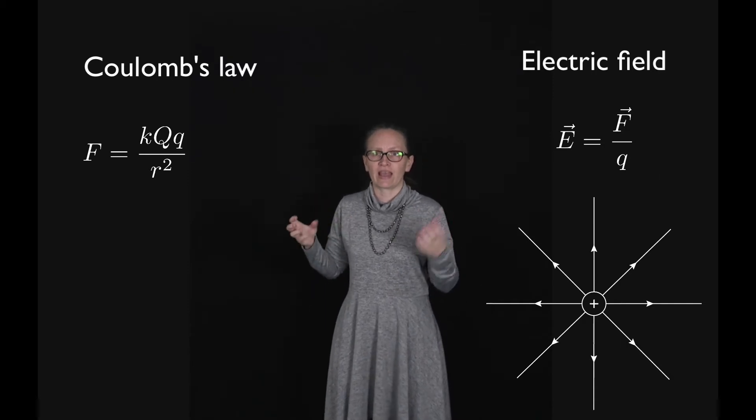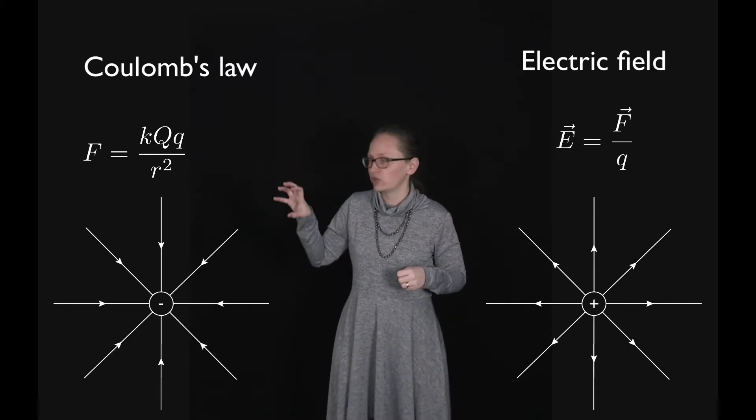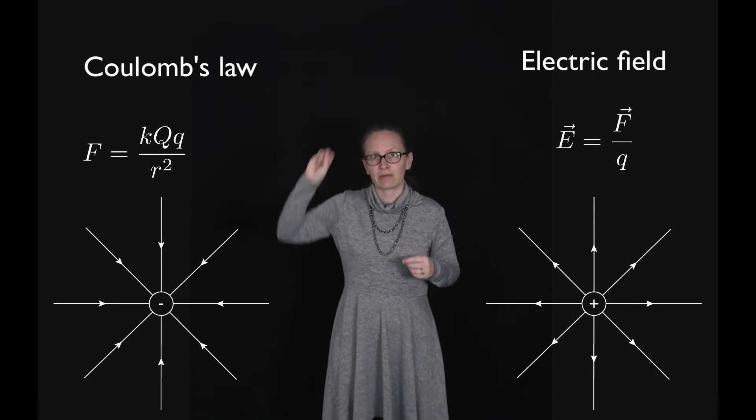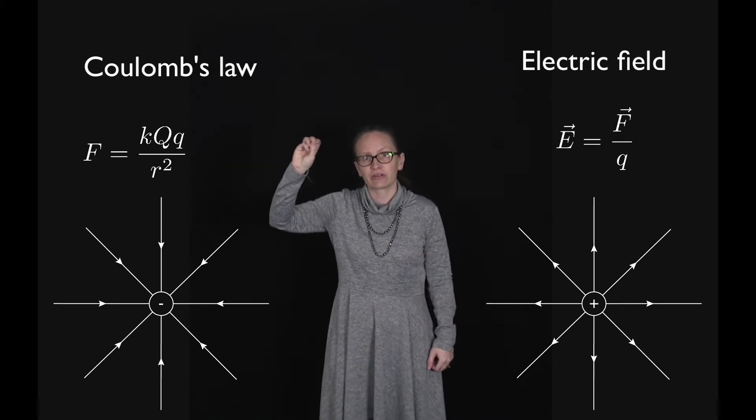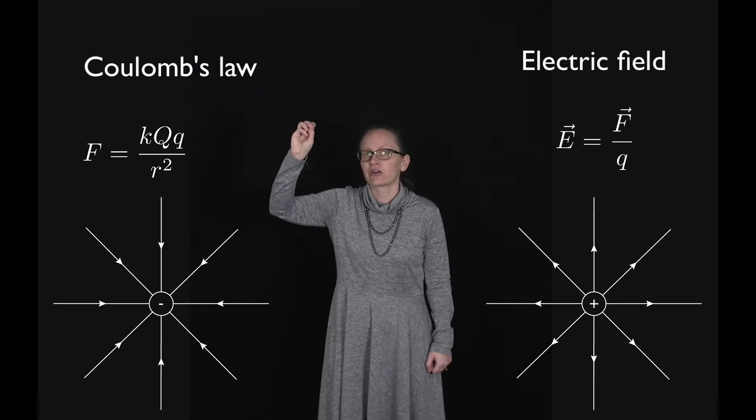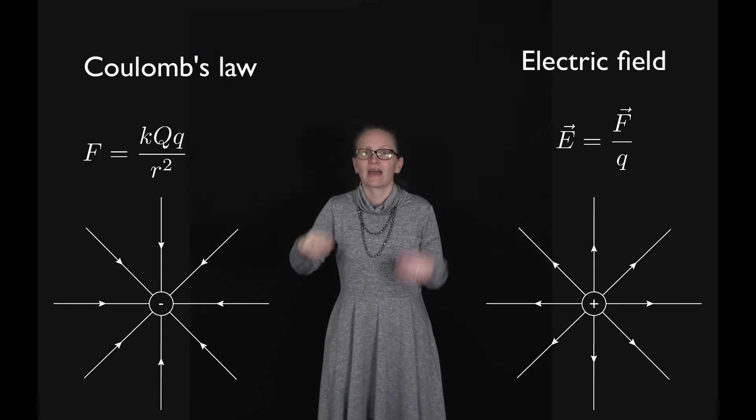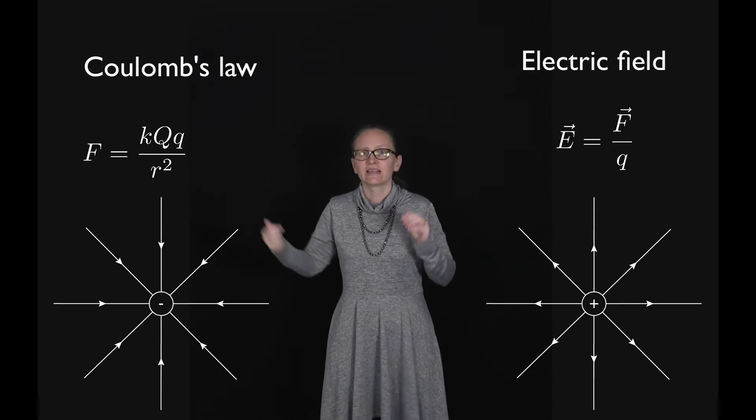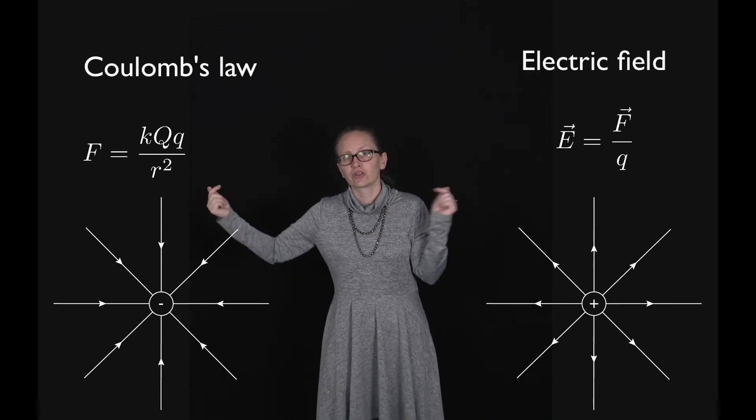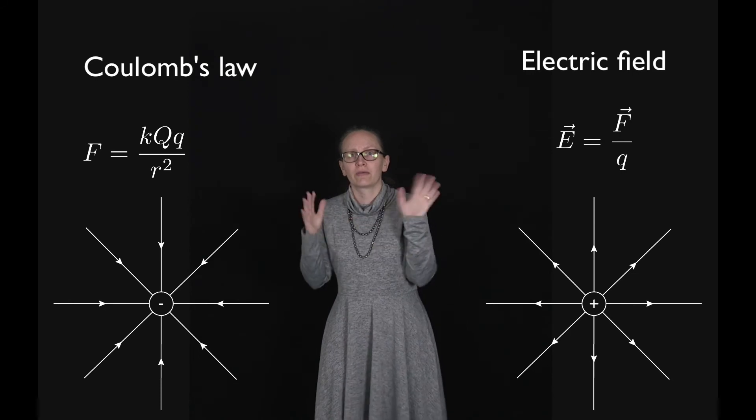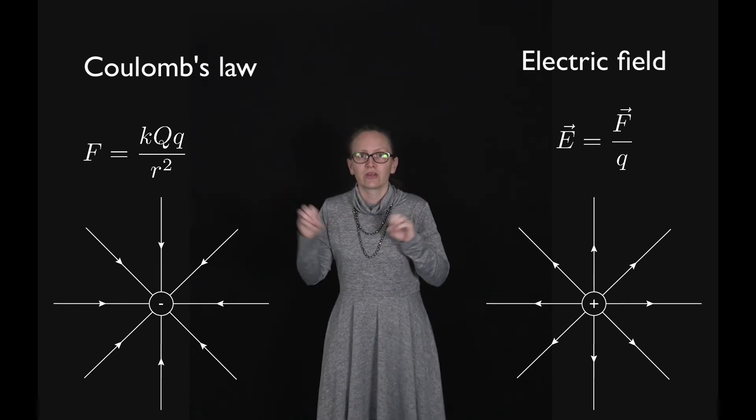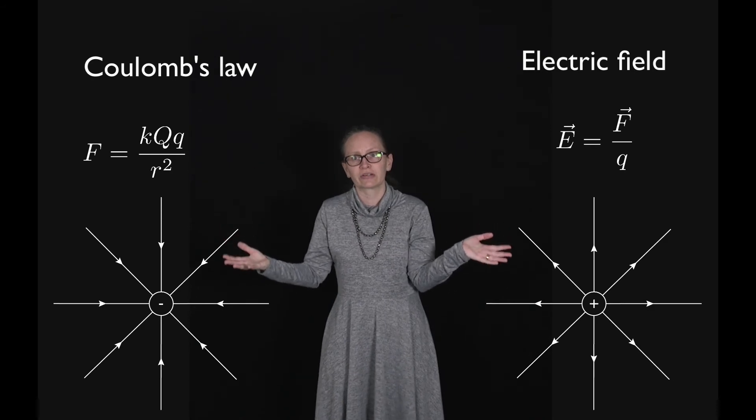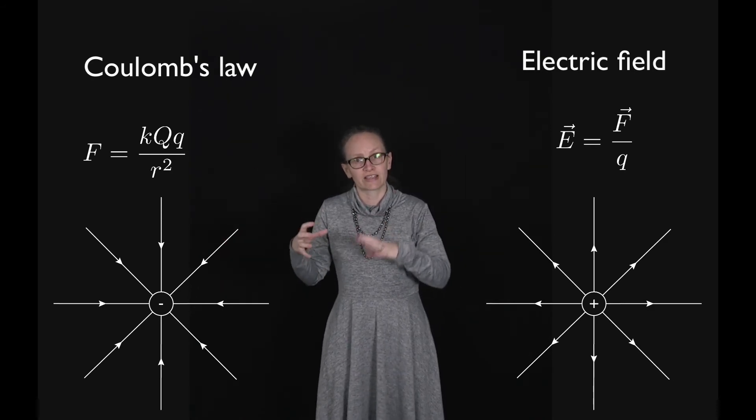Now if we imagined using a negative charge, negative Q, to create this field, in that case when we place our test particle, our positive test particle, it is going to feel a force towards that negative Q. And so in this case, the electric field lines are going towards the charged particle. So electric field lines go away from positive particles and towards negative ones.